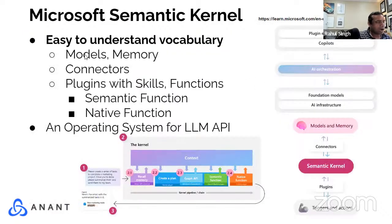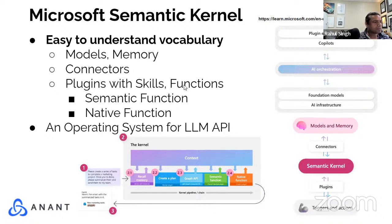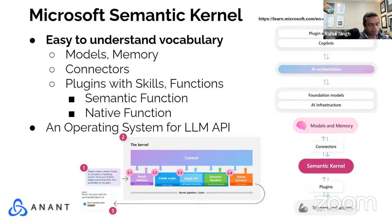The kernel looks at your question and determines from a catalog of skills, memories, and other APIs through connectors what to do. It then plans and executes them. After the answer comes back, it gives you something for the user. The main difference I like about Semantic Kernel over LangChain and LlamaIndex is that the vocabulary is much easier to understand. They have models and memory — model is like an LLM model, and memory is basically any type of data. They have connectors for memory and for models, and then we can do plugins using skills and functions.